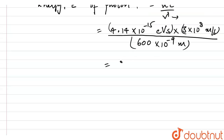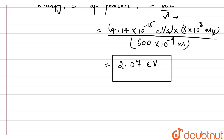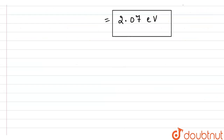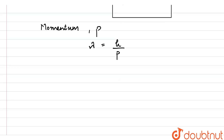This comes out to be 2.07 electron volt — this is the energy of the photon. Now we have to calculate the momentum of this photon. Let's say momentum is p. We know that lambda is equal to h over p, or we can say the momentum is h over lambda.